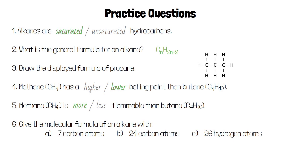For an alkane with seven carbon atoms, N is equal to 7, so 2N is equal to 14 and 2N+2 must be 16. That means an alkane with seven carbon atoms will have the molecular formula C7H16.